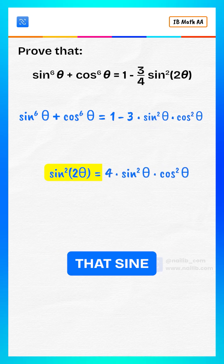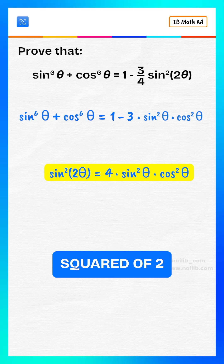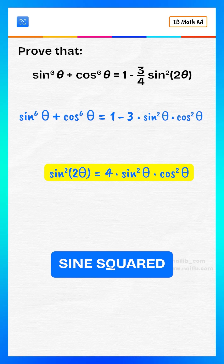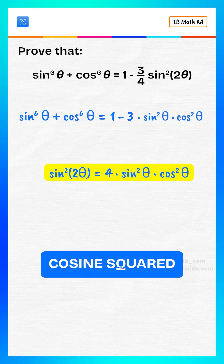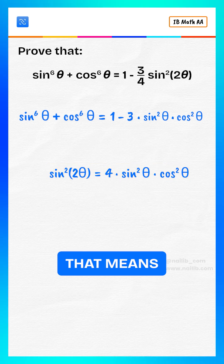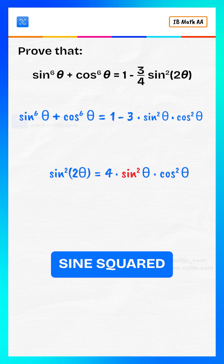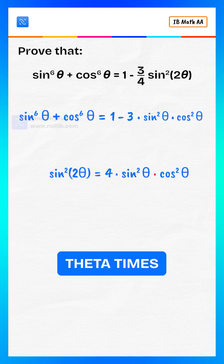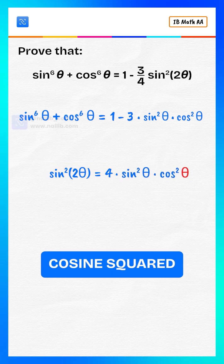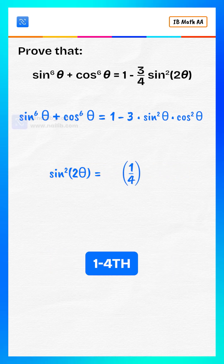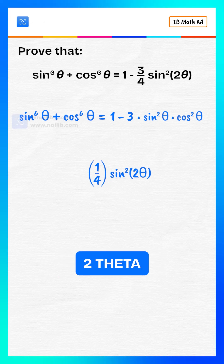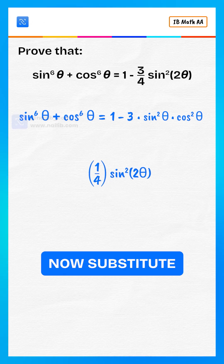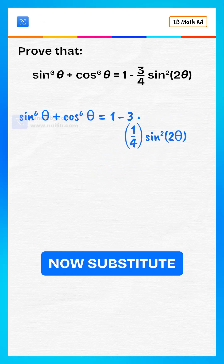We know that sine squared of 2 theta equals 4 times sine squared theta times cosine squared theta. That means sine squared theta times cosine squared theta equals one fourth times sine squared of 2 theta. Now substitute back.